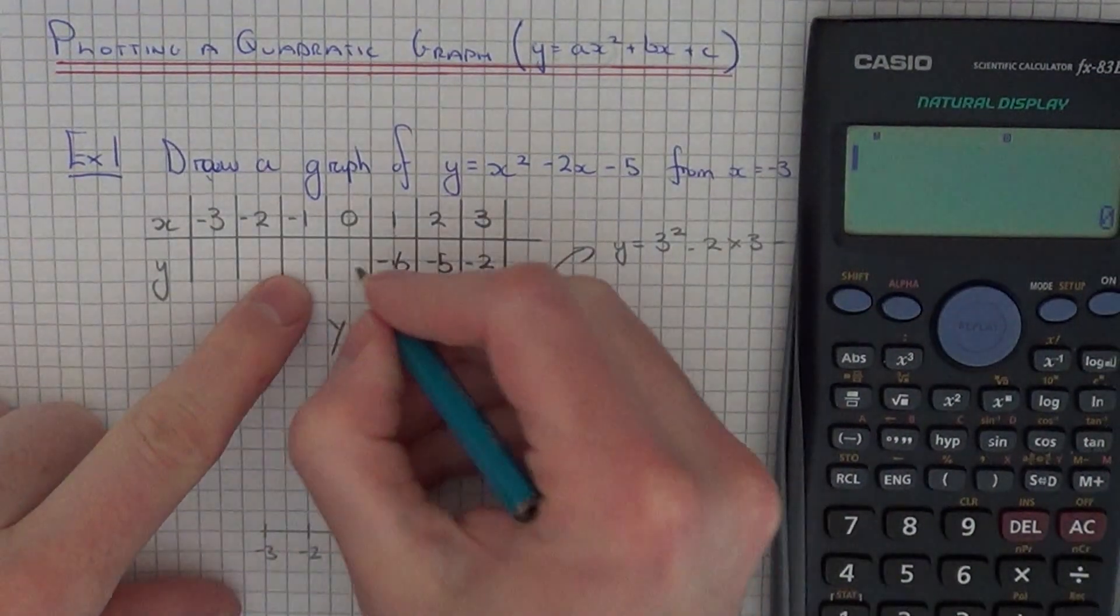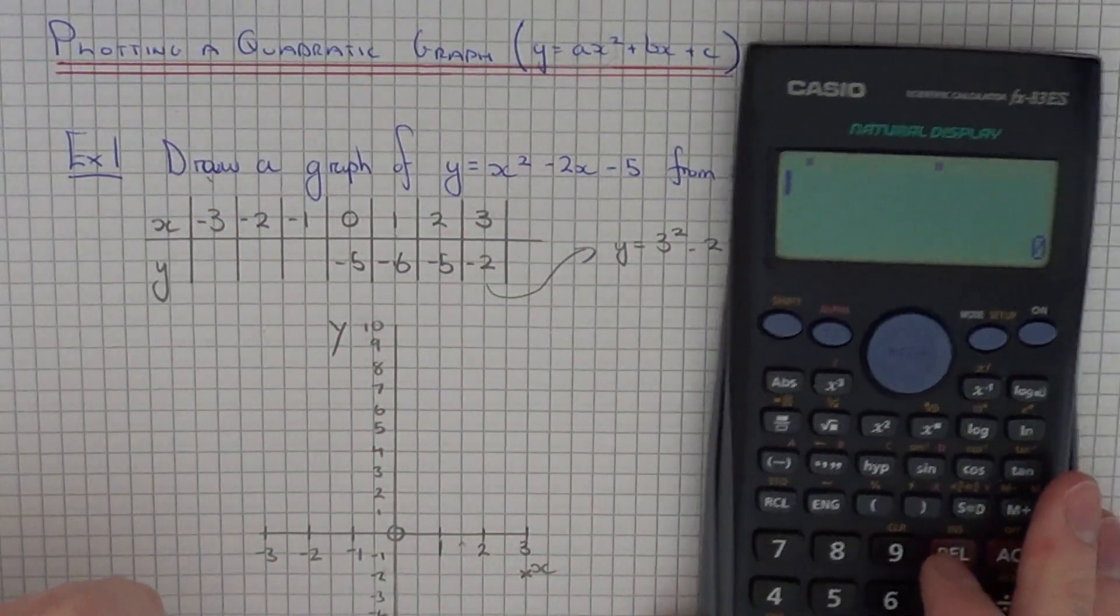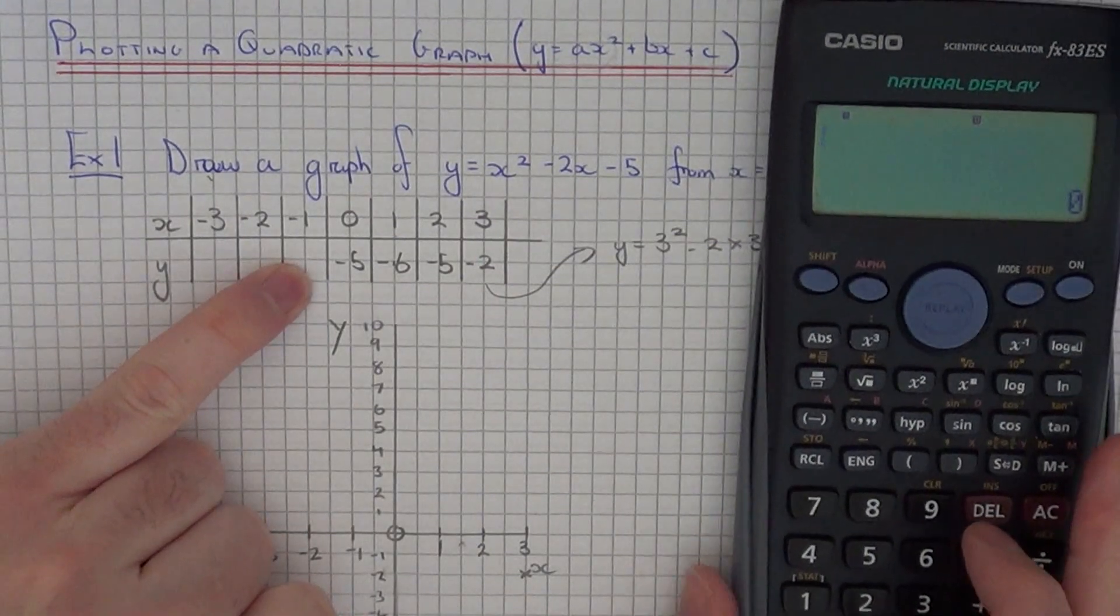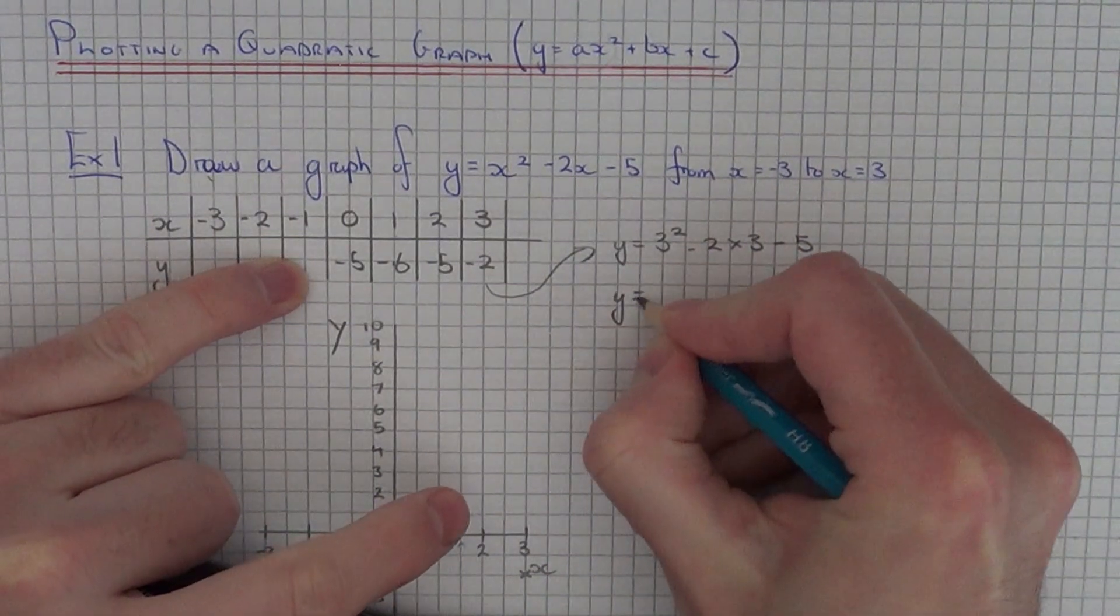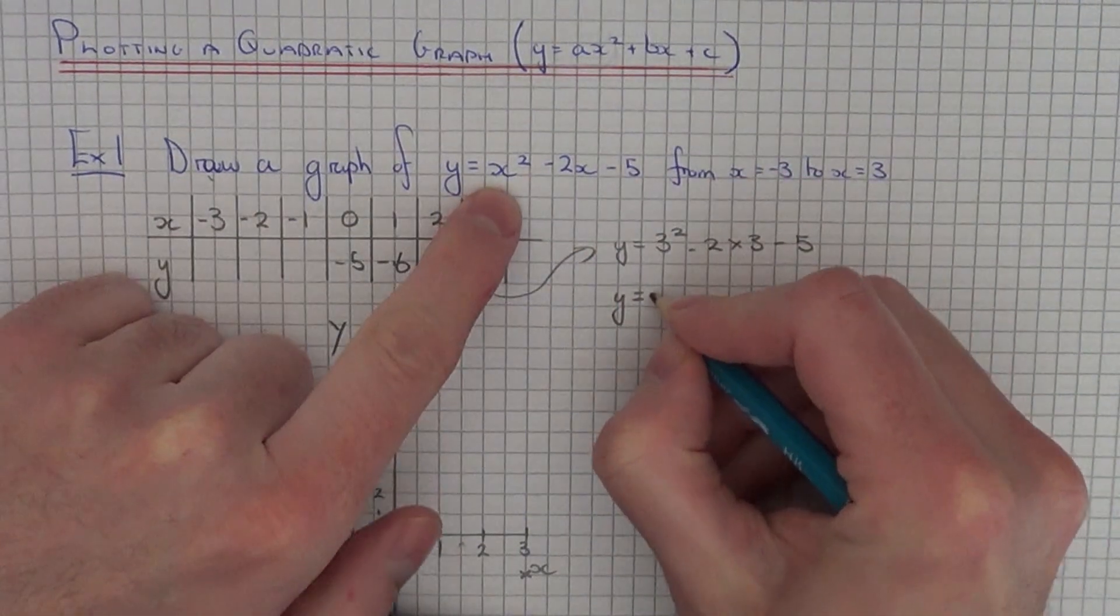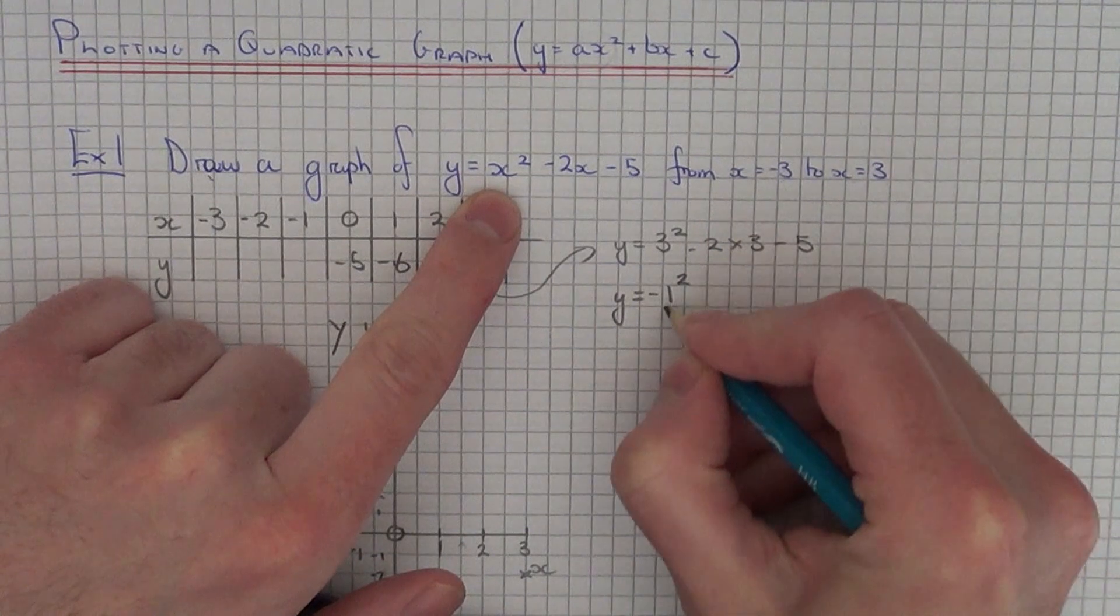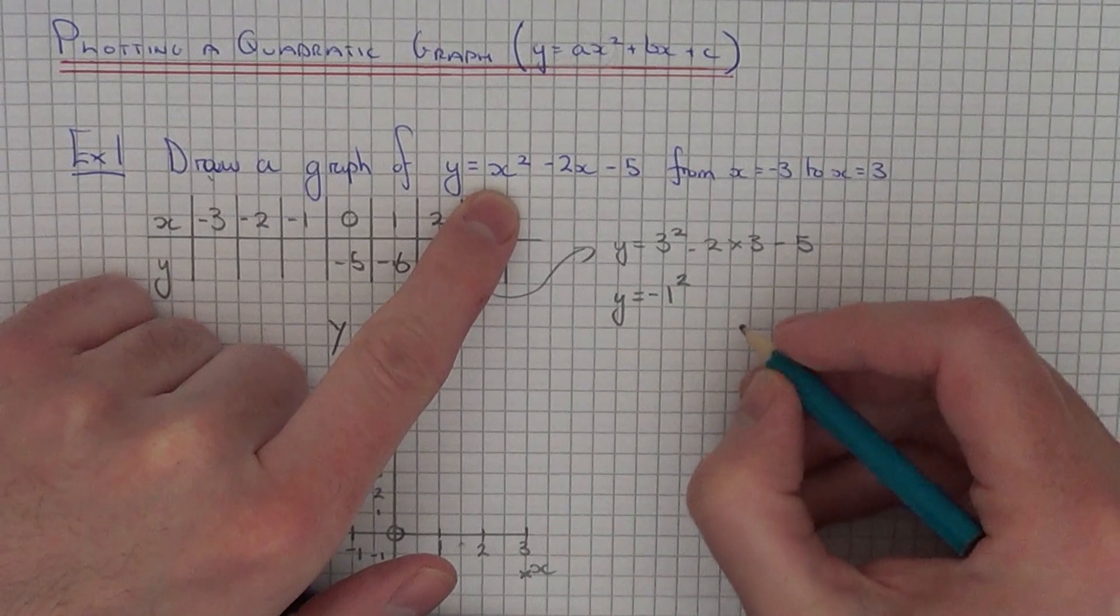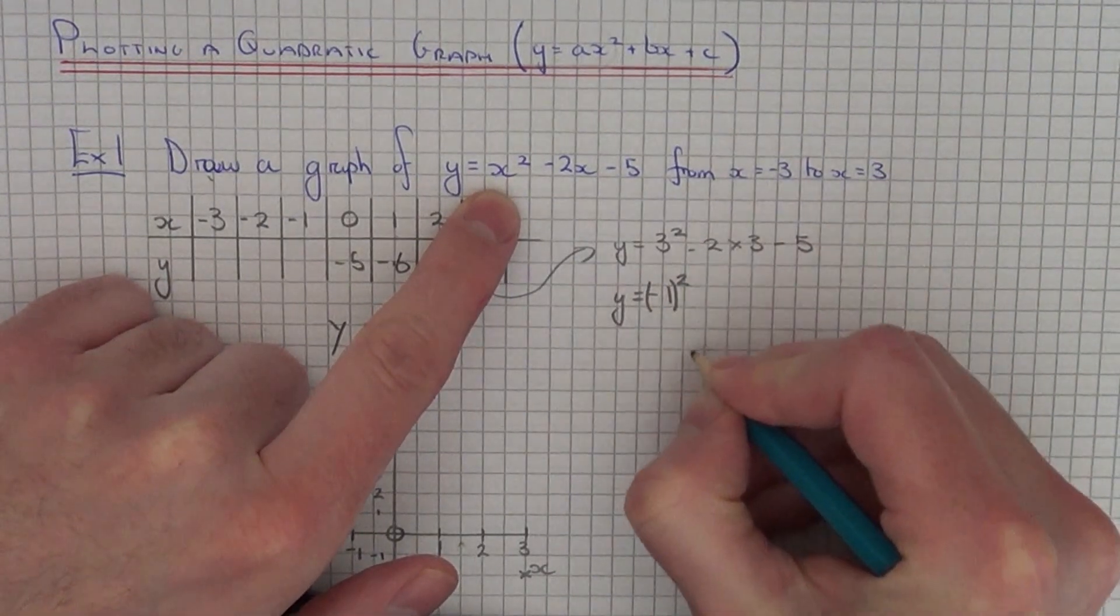So we've now got to do negative x coordinates. Now these ones you've got to be careful with. So let's start with x equals minus 1. So the reason why you've got to be careful is because when you square a negative number it becomes positive. So we've got to do minus 1 squared. Now if you just type that in on your calculator as it is it will give you minus 1 which is incorrect. It should be plus 1 because it's minus 1 times minus 1.